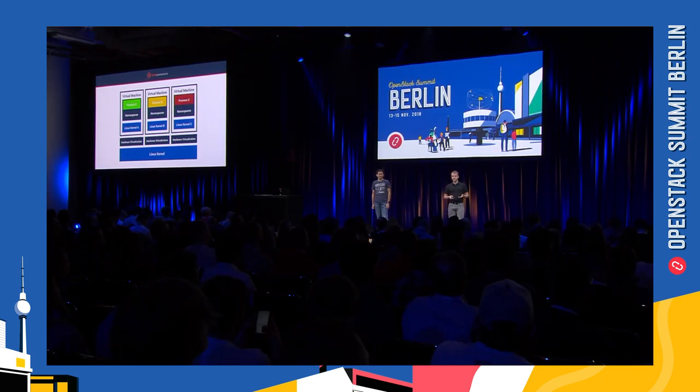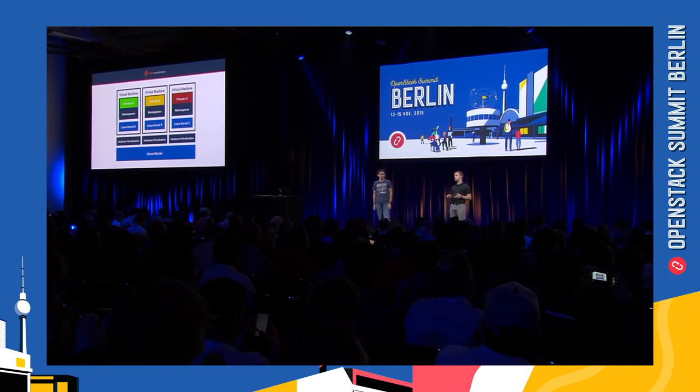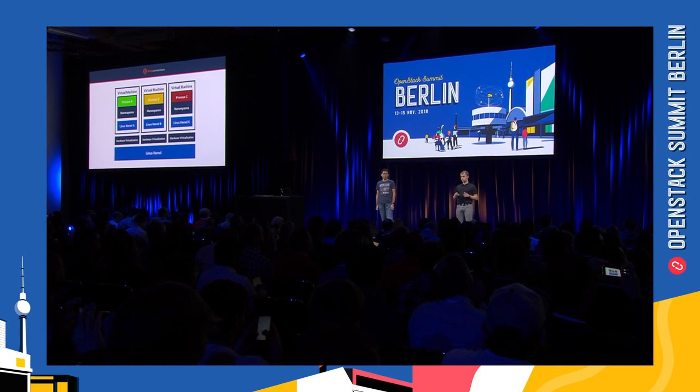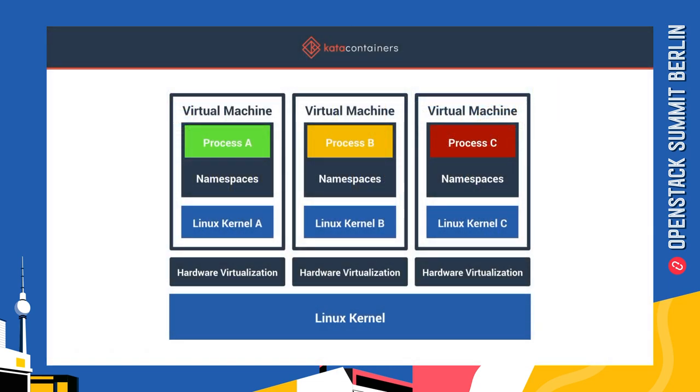When you're looking at defense in depth, the design pattern is that you want to use multiple layers. So if you have a security-conscious solution, you would be using defense in depth. That's what we're looking at with the Kata containers project — to provide that second level of isolation utilizing hardware virtualization. With Kata containers, each container or pod executes within its own lightweight virtual machine using its own unique kernel.